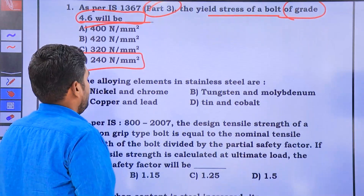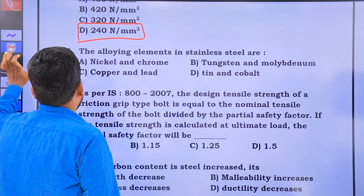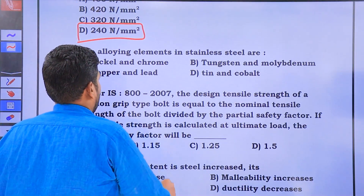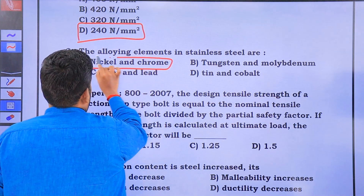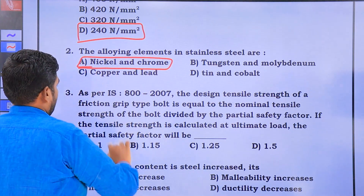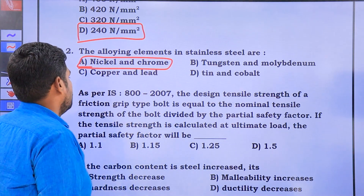The alloying elements of stainless steels are Nickel and Chromium.